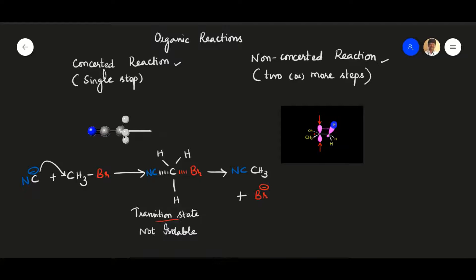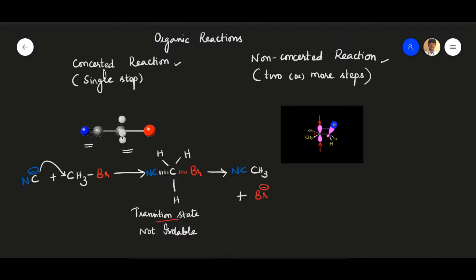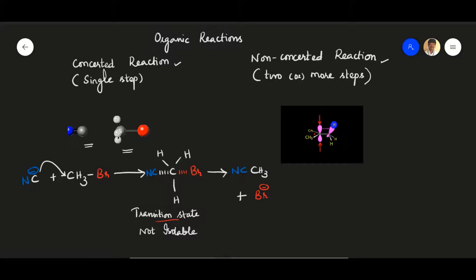Now we are going to see about a reaction happening in multiple steps. In a concerted reaction, methyl bromide is attacked by the cyanide anion — the attack of cyanide and the breaking of the bromine bond take place simultaneously. Bond formation and bond breaking occur at the same time, so we consider this a single-step reaction. Since the transition state is not isolable and is highly hypothetical, it is not a true species, and the reaction proceeds in only one step — hence it is called a concerted reaction.